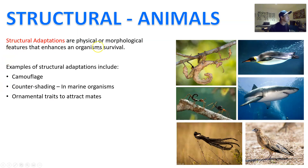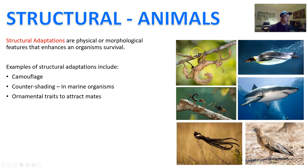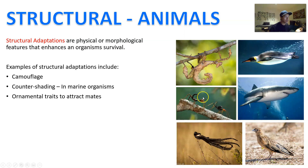When we talk about structural adaptations, we are talking about the physical or morphological features that enhance the organism's survival. For example, in animals that could be camouflage. That's the spiny leaf insect — that's the adult. But the offspring actually look remarkably like an ant. The larvae look and behave and walk around like ants, and that's an adaptation. The adults, on the other hand, look like sticks and blend really well in the environment.